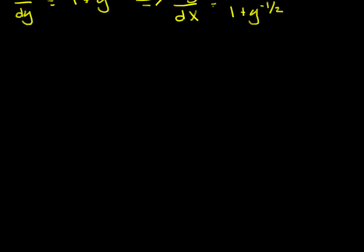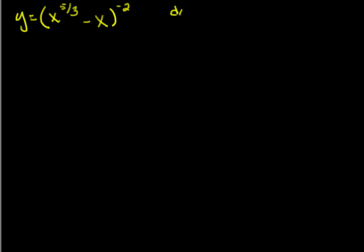In this next problem, I'm not going to necessarily be doing reciprocals, but I want to take just an opportunity to give an example of a rational power. So if y is equal to x to the five-thirds minus x, and let's just raise it all to the negative two power. And we want to know what is dy/dx equal to.